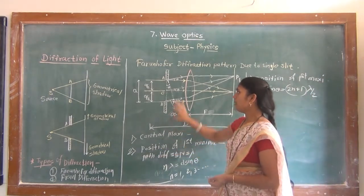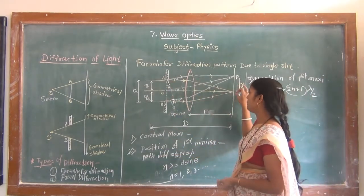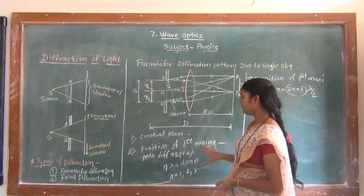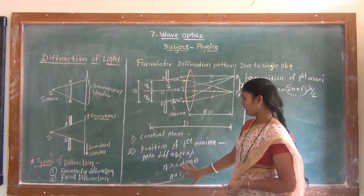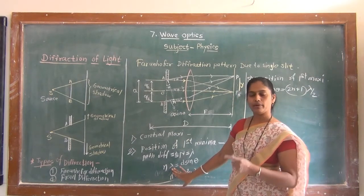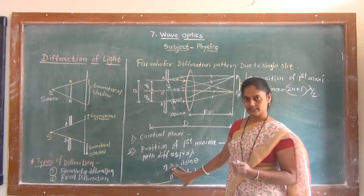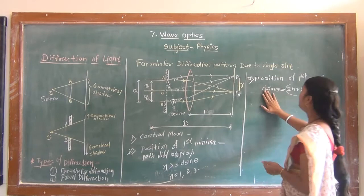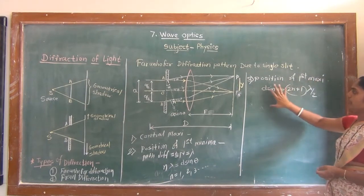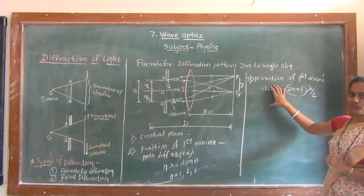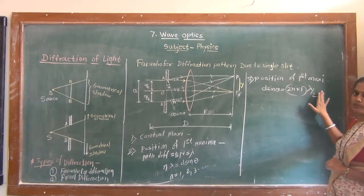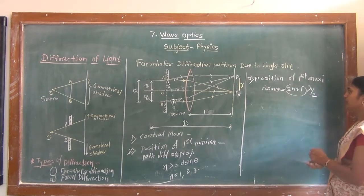So we get these conditions. For central maxima, path difference is zero. For position of the first minima, path difference is lambda, 2·lambda, 3·lambda, etc. And for the position of first maxima, path difference d·sinθ equals (2N + 1)·lambda/2. Then the next point will be the width of central maxima.